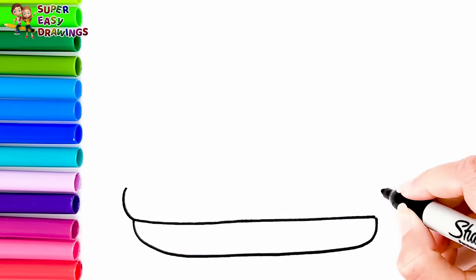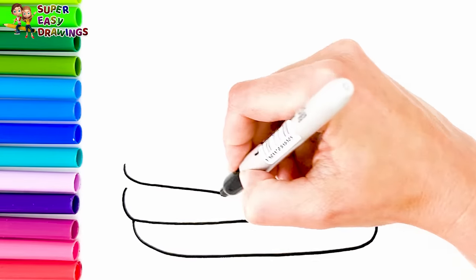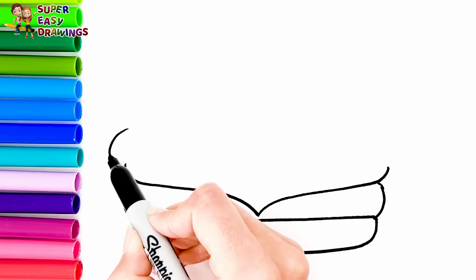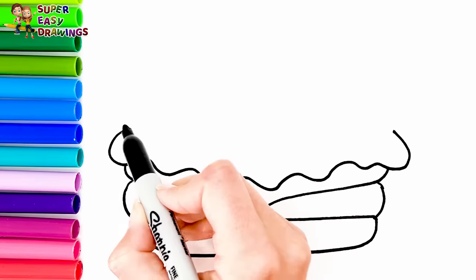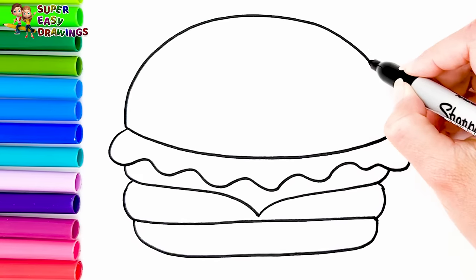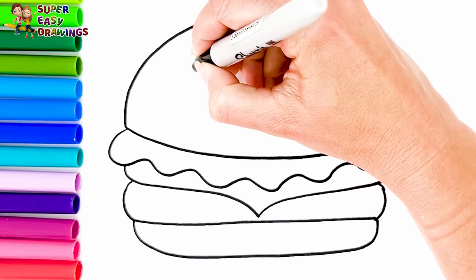First I'm going to draw the bottom of the hamburger, then the meat, and cheese too. The salad, and finally the top of the hamburger. It's big! Yummy!